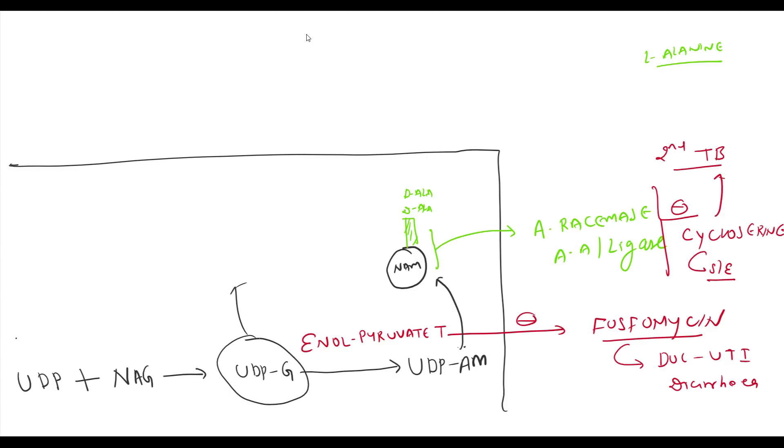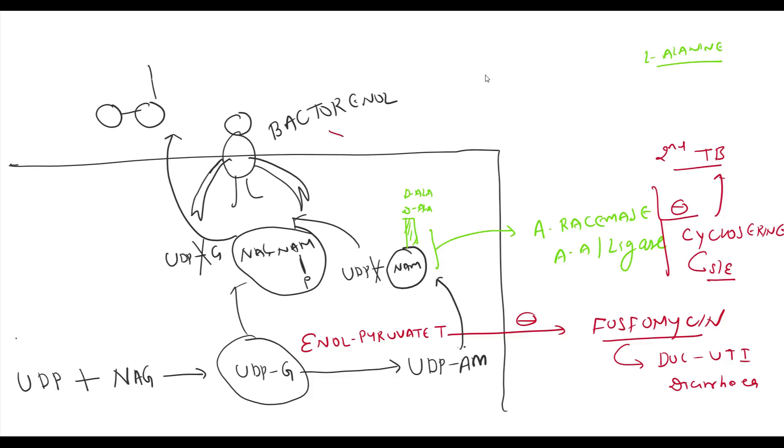Now this UDP-G and peptide contained UDP-M are taken up by cell membrane carrier protein, bactoprenol. This bactoprenol removes UDP from acetyl glucosamine and peptide containing muramic acid and combines NAG with NAM and transport this whole unit from cytoplasm to outside of cell. This bactoprenol protein is inhibited by antibiotic bacitracin. Bacitracin is indicated for topical use only due to its nephrotoxicity.